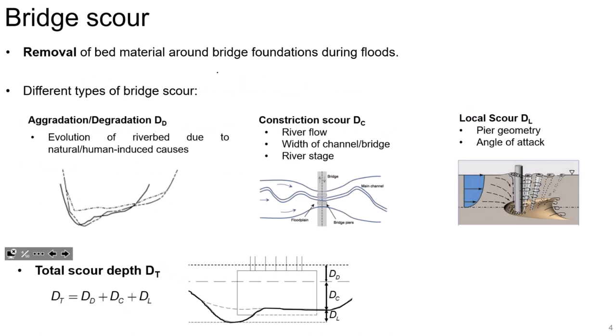Bridge scour: scour is the removal of bed materials around bridge foundations during floods. There are different types of scour, but the most important is local scour that arises due to the presence of submerged structures constituting an obstacle to normal flow of the river. This results in formation of turbulence and removal of sediments around bridge foundations.